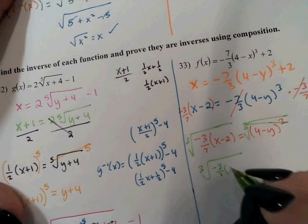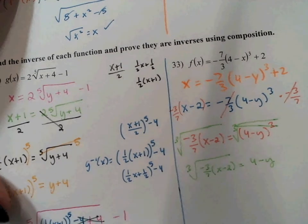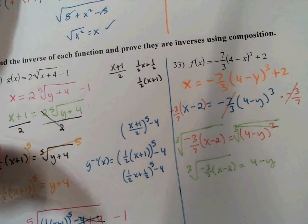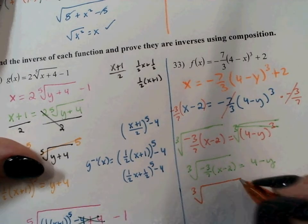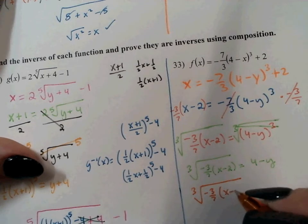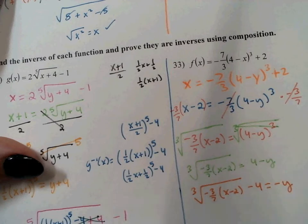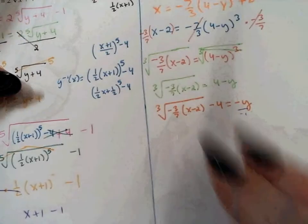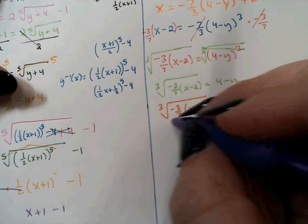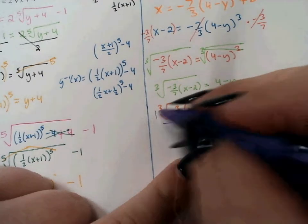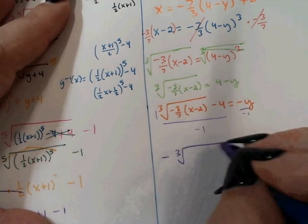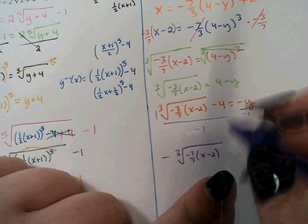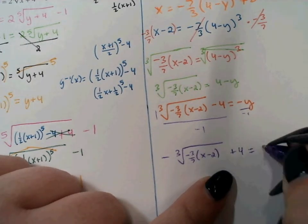So I've got the cubed root of negative 3 sevenths times x minus 2, equals 4 minus y. Now there are two ways to isolate y — most people would subtract the 4 and divide by a negative. Remember, when you divide the entire side by a negative, each individual term is divided by a negative. So the cubed root term's coefficient becomes negative, and negative 4 divided by negative 1 is positive 4. So f inverse equals negative cubed root of negative 3 sevenths times x minus 2, plus 4.